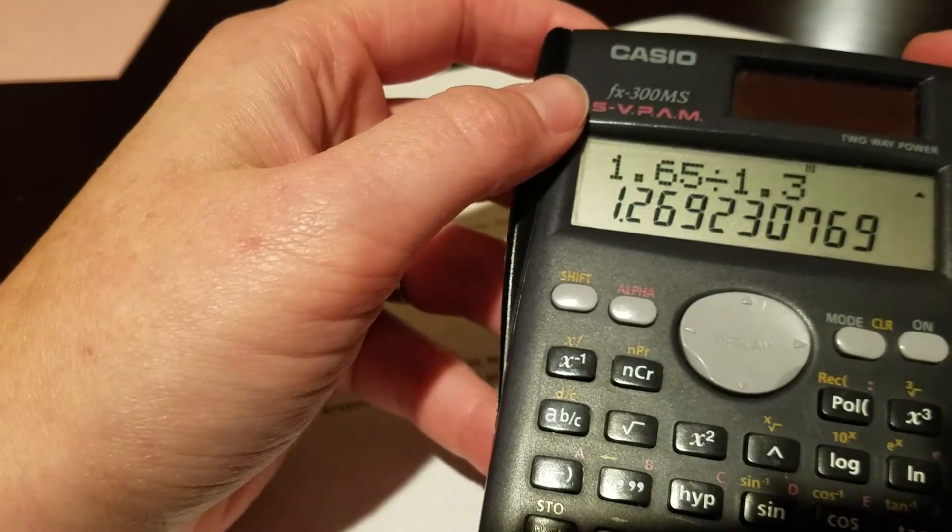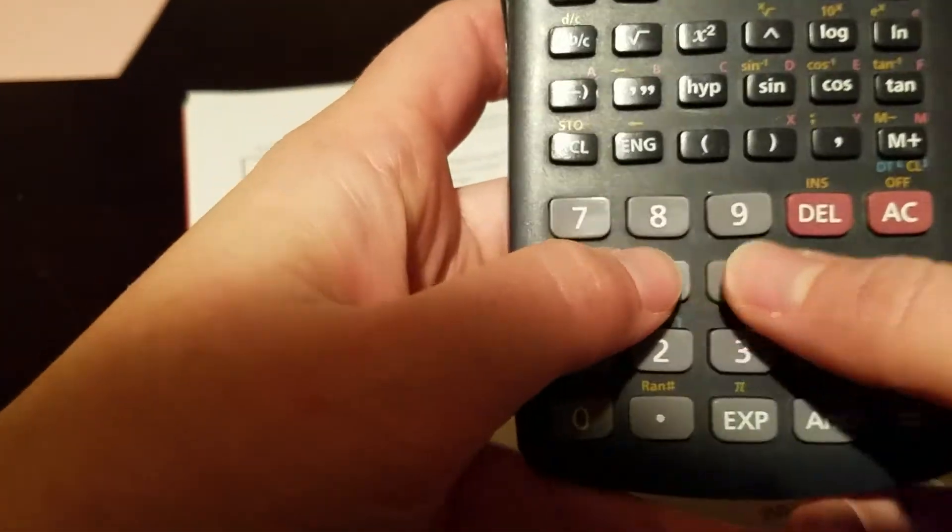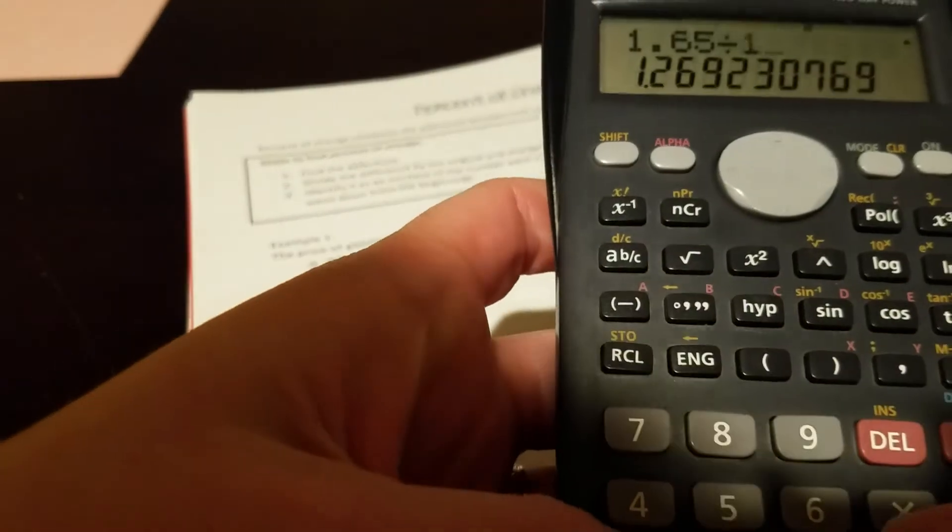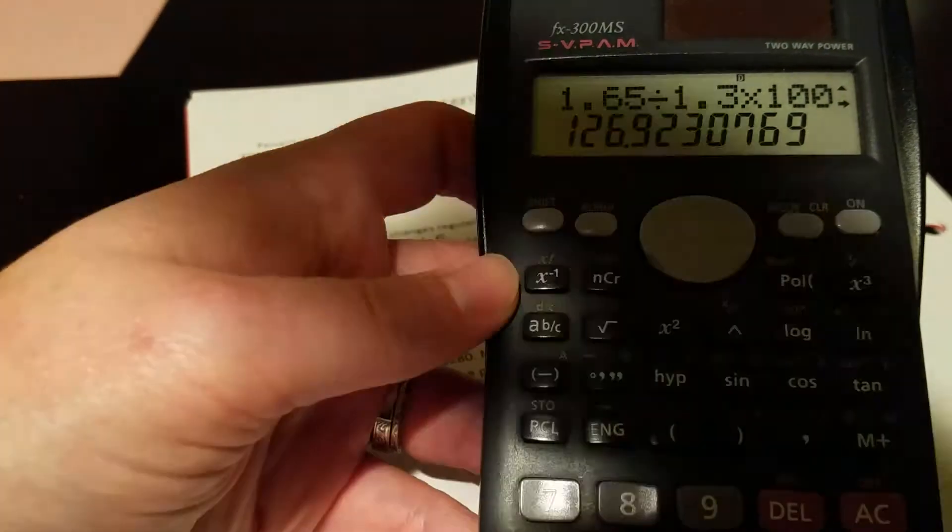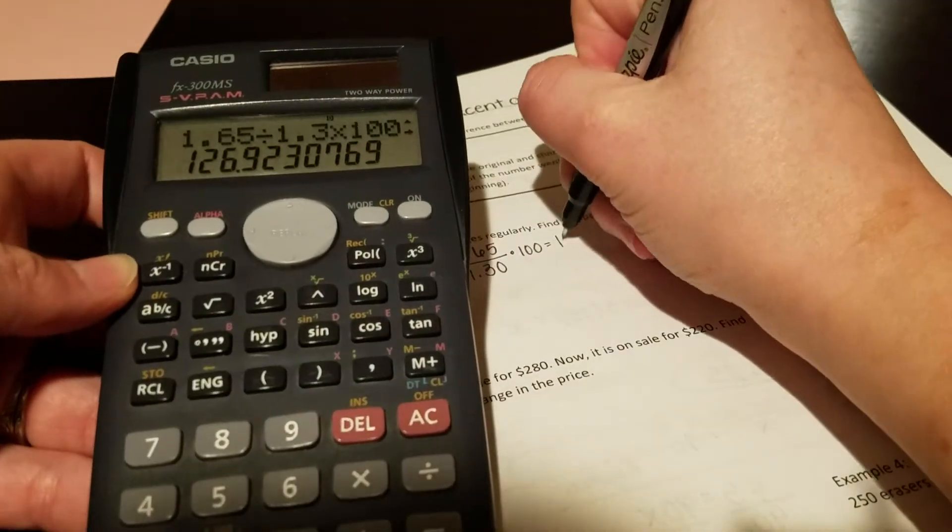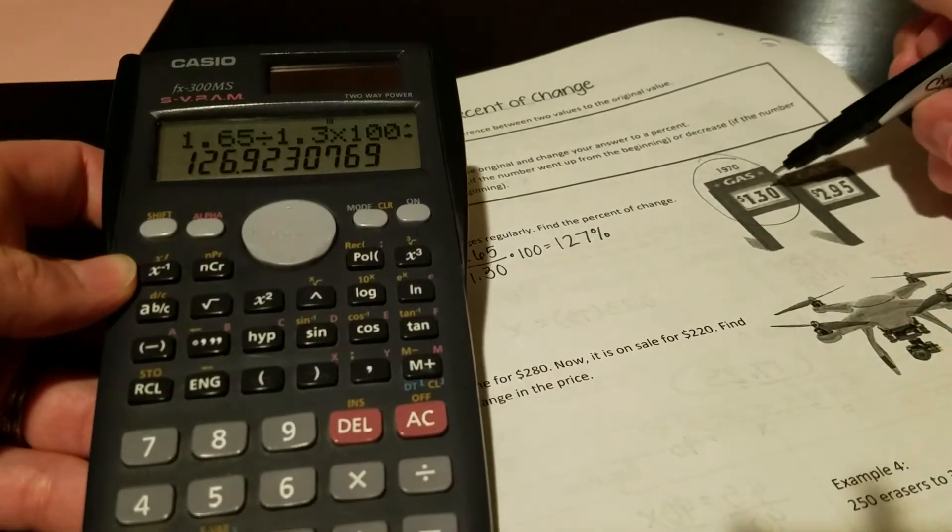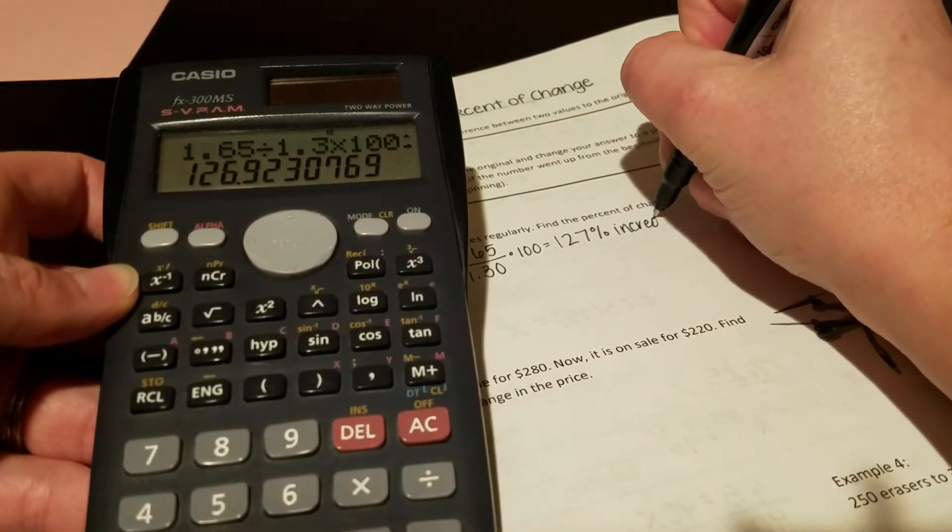So I'll show you the difference here. If you just do 1.65 divided by 1.30, you would end up with 1.269, which would then mean that you have to move your decimal point two places to the right. The other option would be to do 1.65 divided by 1.3 times 100, and it's now already moved it over. So you can see it's 126.9. For this section, we really just round to the nearest whole number. So 126.9 would be 127%. And did the price go up from the original or did it go down? It went up. So this is what we call an increase.